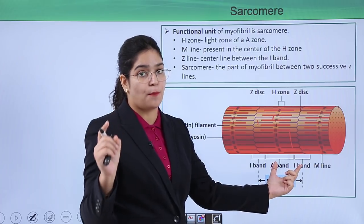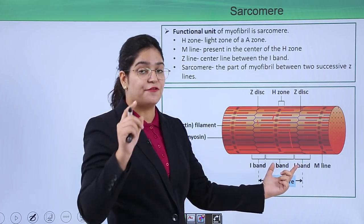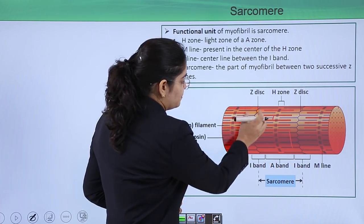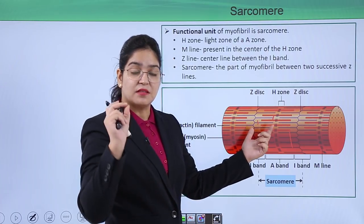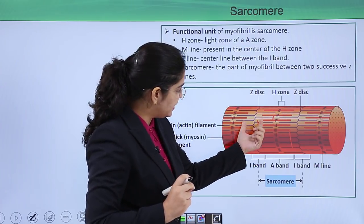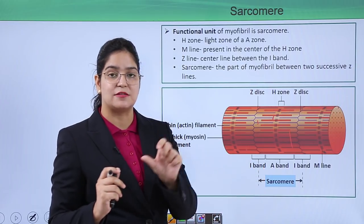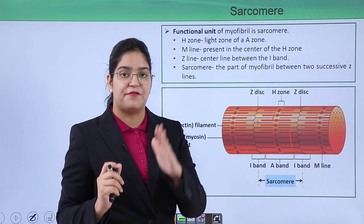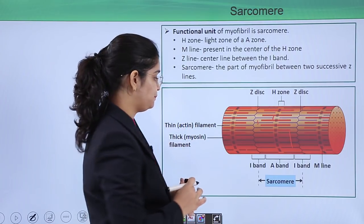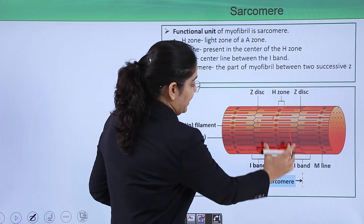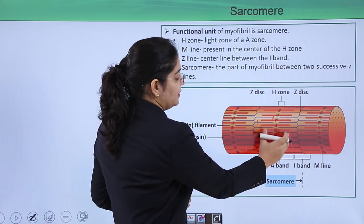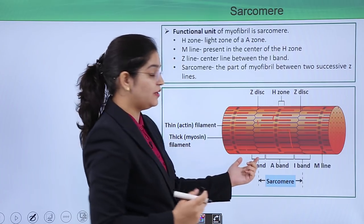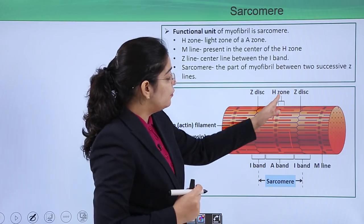The A band is the anisotropic band, which has a different refractive index at different planes. A zone where only the thin filament is present is called the isotropic band — the I band — which has the same refractive index at different planes. So: overlapping of both thin and thick filament = A band; only thin filament = I band.